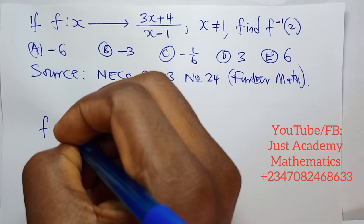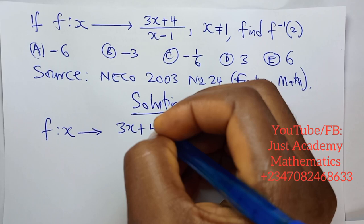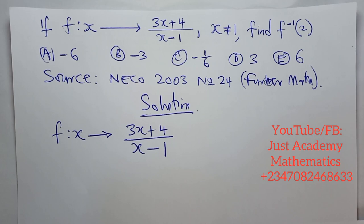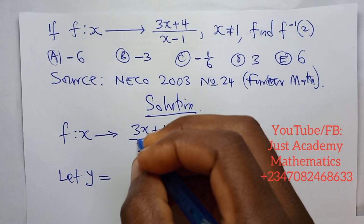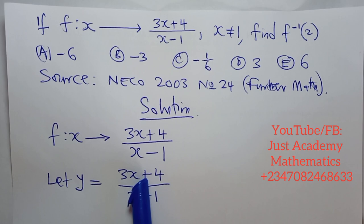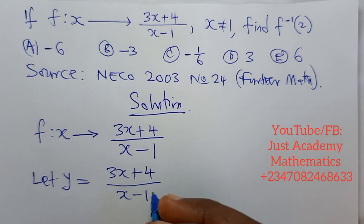If f(x) is given as (3x+4)/(x-1), to find the inverse, the procedure is very simple. We let y equals this: (3x+4)/(x-1). Then we make x the subject of the formula.